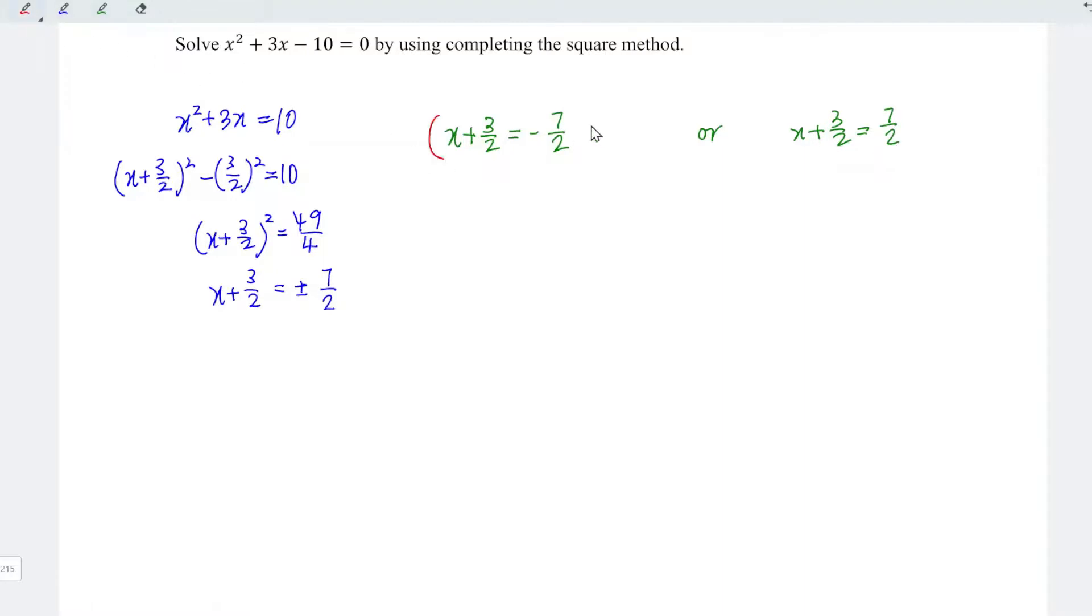Let's solve for x. For the first equation, we can minus 3 over 2 from both sides. So for the left-hand side, plus 3 over 2 minus 3 over 2, we're left with 0. x plus 0 is x. And this equals minus 7 over 2 minus 3 over 2, which is minus 10 over 2. Let's simplify. We should have minus 5.